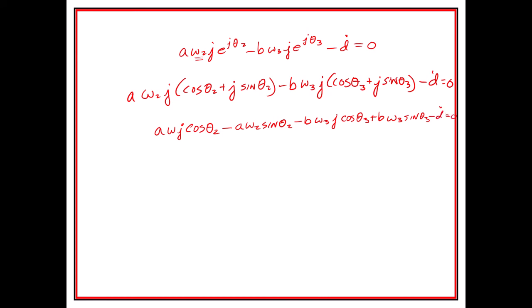If we decide to take the real ones, they're right here and right there. Actually, let's take the imaginary ones first. The imaginary components are just this component and that component. So we say that's going to be a*omega2*cos(theta2) minus b*omega3*cos(theta3) equals zero. We're able to solve for omega3 easy enough: omega3 equals (a*cos(theta2))/(b*cos(theta3))*omega2.